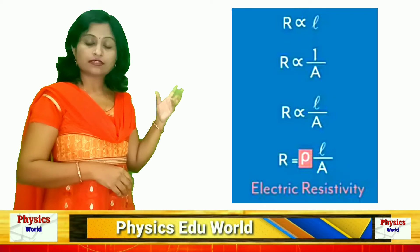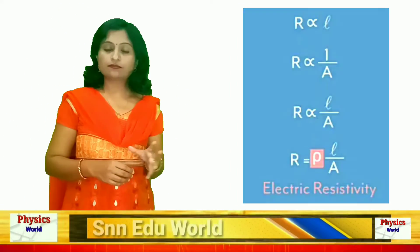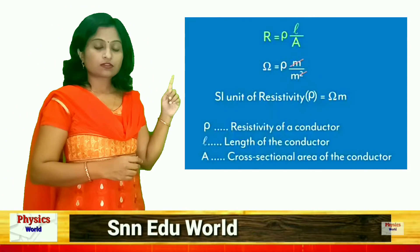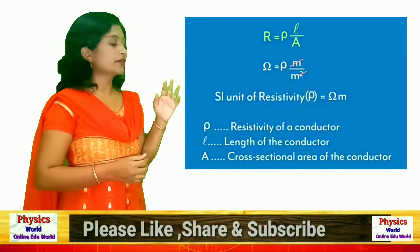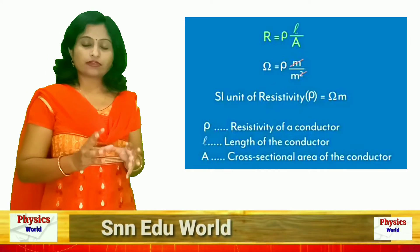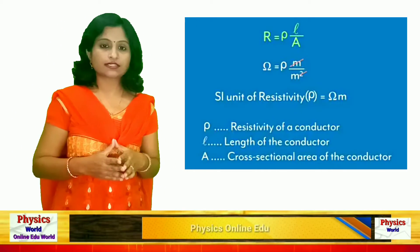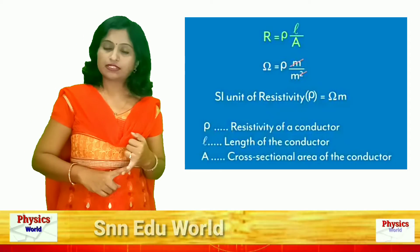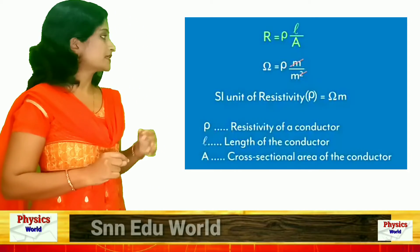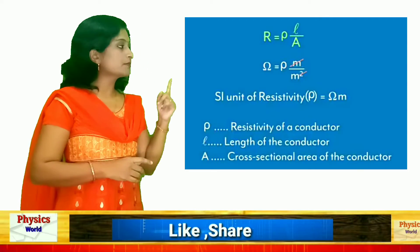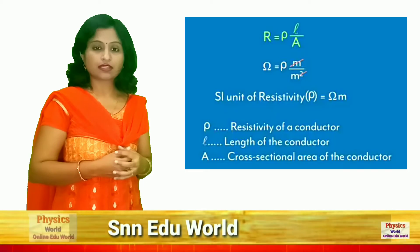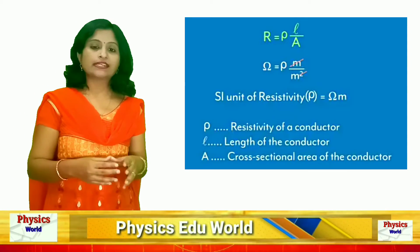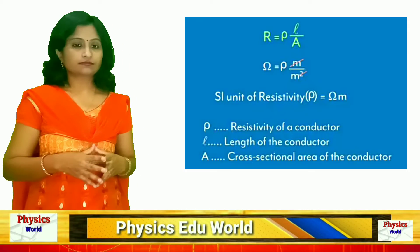Now let us find the SI unit for resistivity. Using the equation R equals rho times L over A, we can rearrange to find rho. The SI unit for resistivity rho is ohm times meter.